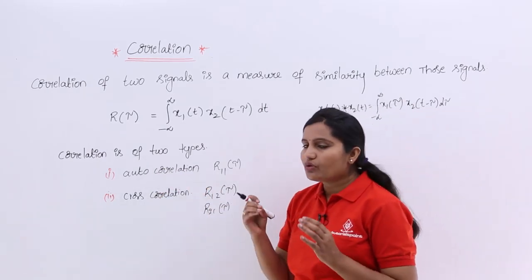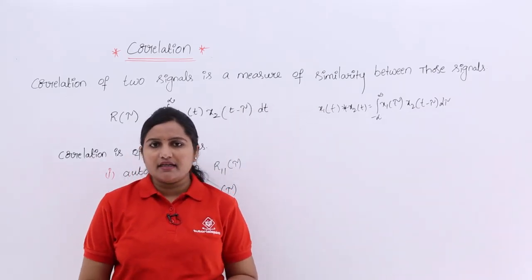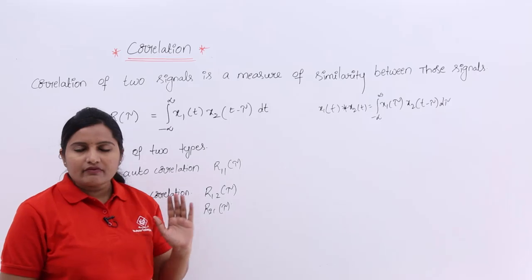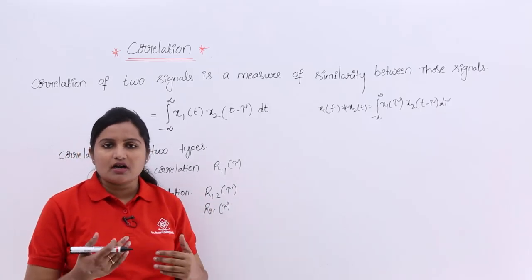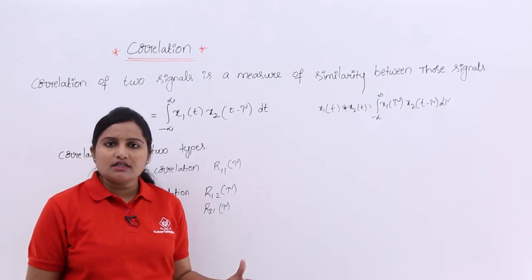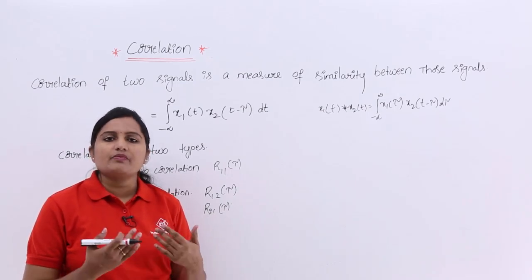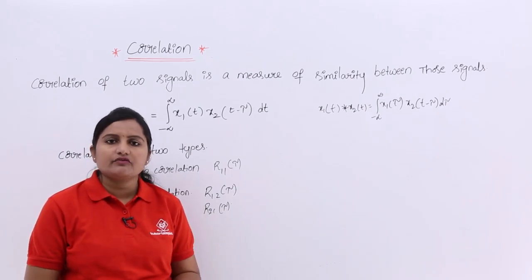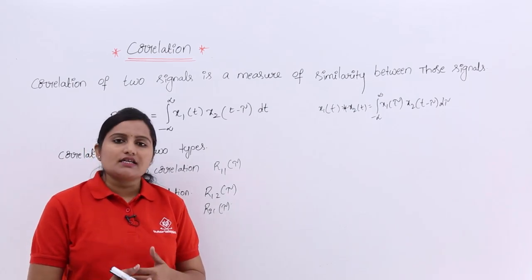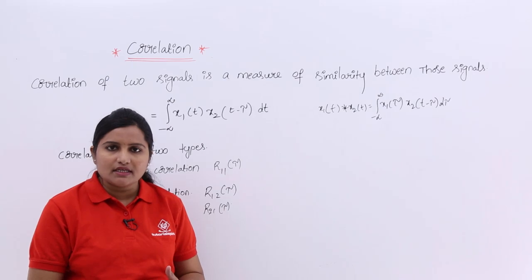So, correlation is nothing but the measure of similarity. We have a general equation for correlation and two types: autocorrelation, which is the measure of similarity between the same signal, and cross-correlation, which is the measure of similarity between two different signals. In the next class, we are going to discuss the autocorrelation function and its properties and some problems in detail.